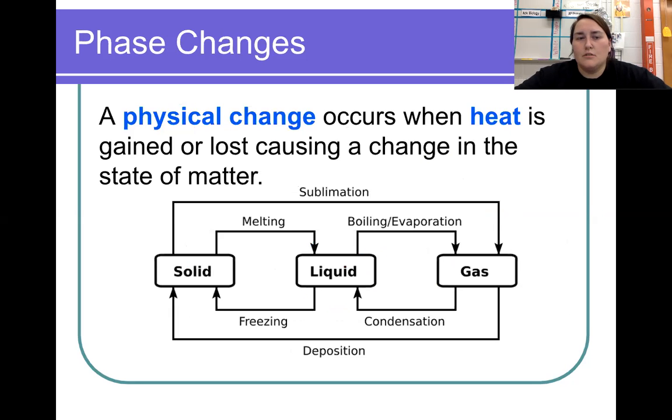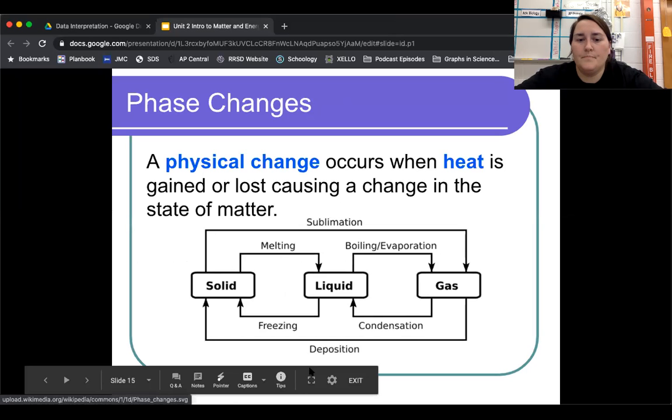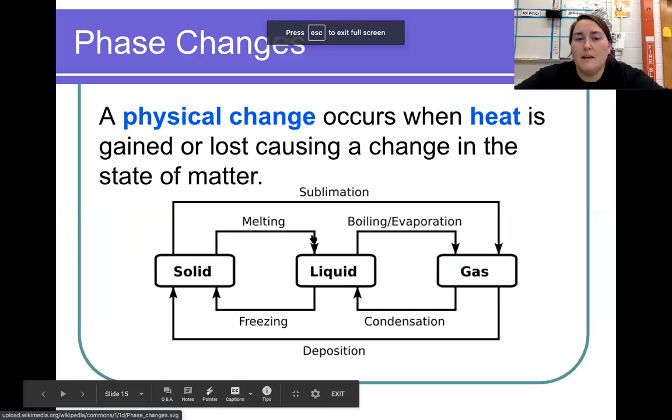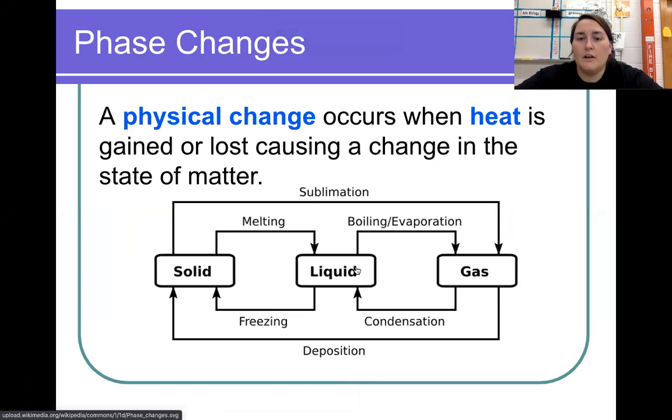That moves us into phase changes. A physical change occurs when heat is gained or lost, causing a change in the state of matter. If we start at a solid and heat it up, it's going to cause that solid to melt into a liquid. If we heat up that liquid enough, it's going to boil and evaporate into a gas. If we cool down the gas, it would condense into a liquid. That liquid, if we continue to cool it down even more, would freeze into that solid again.